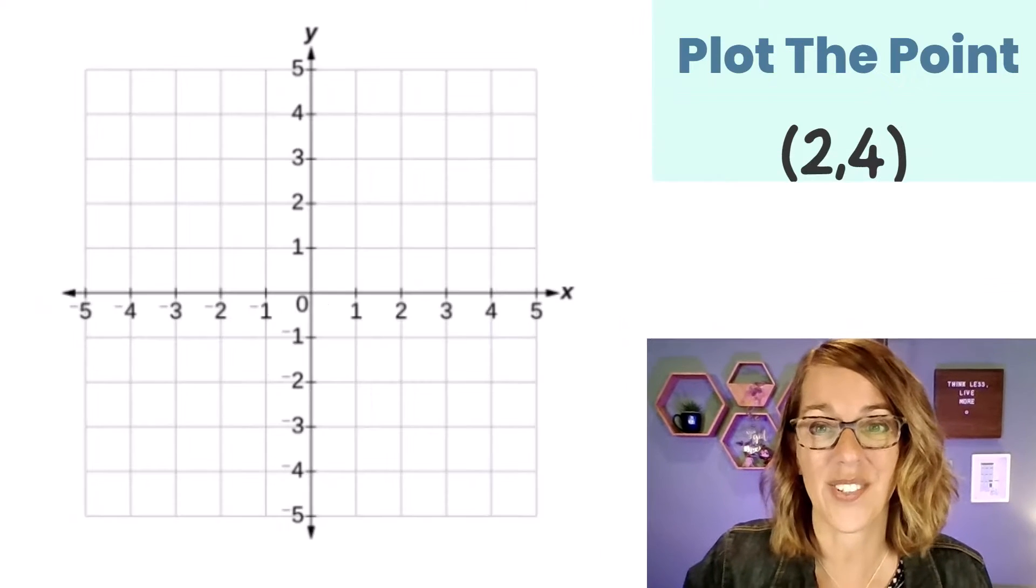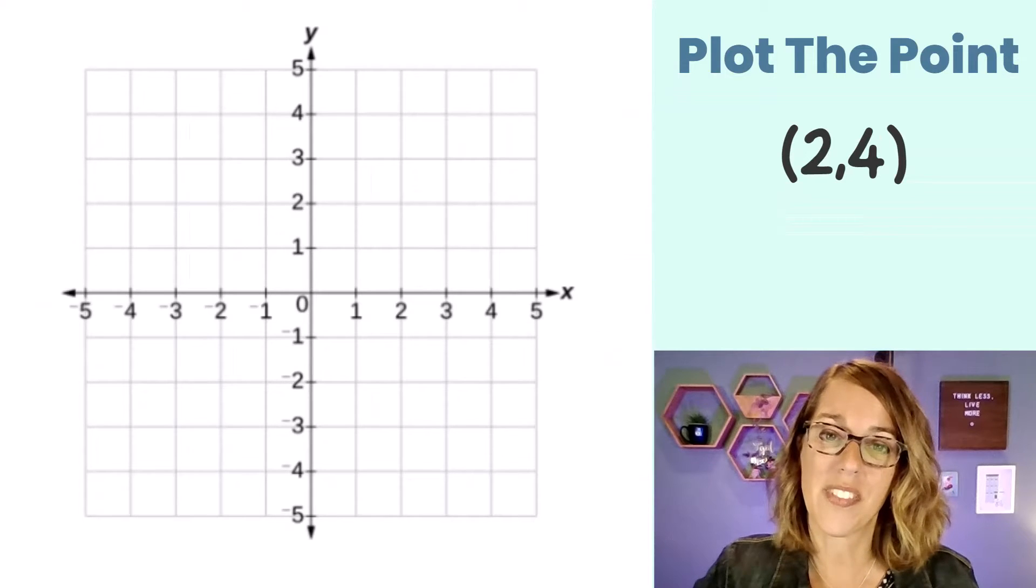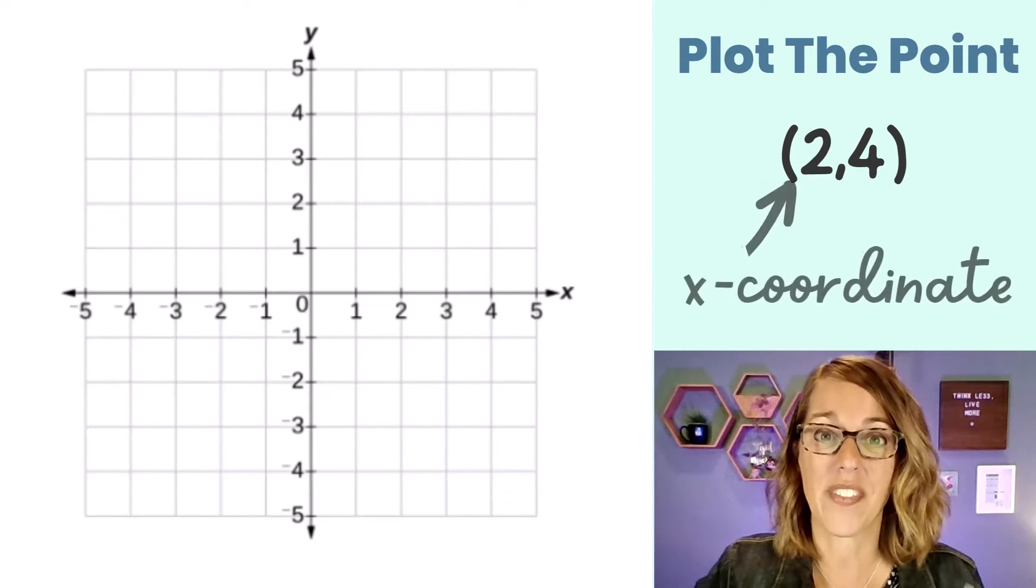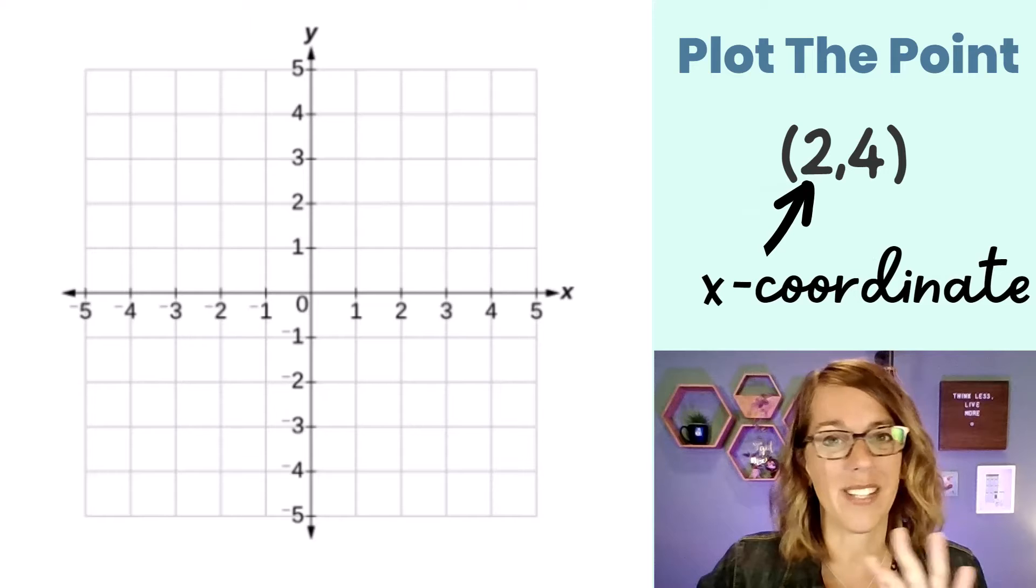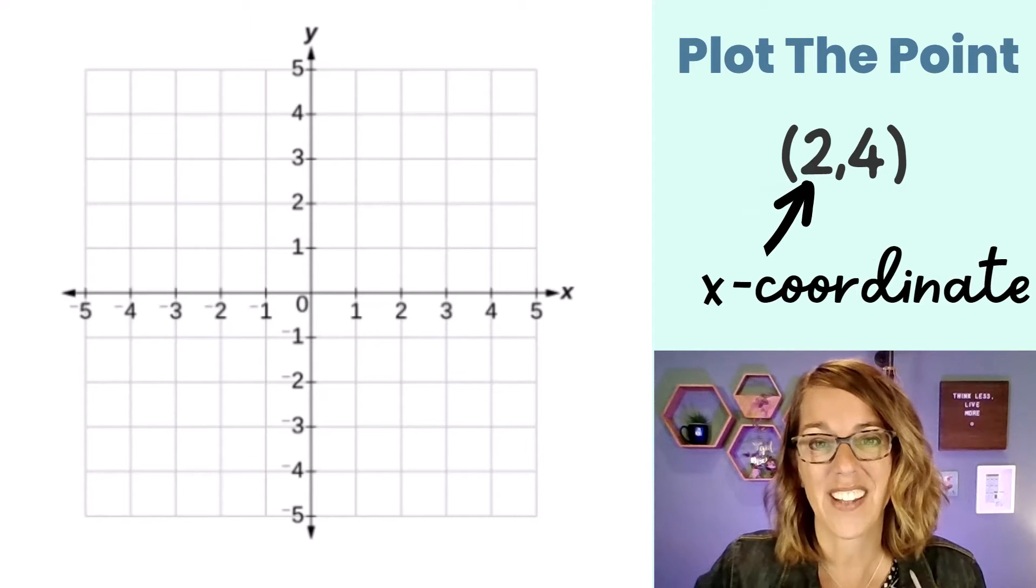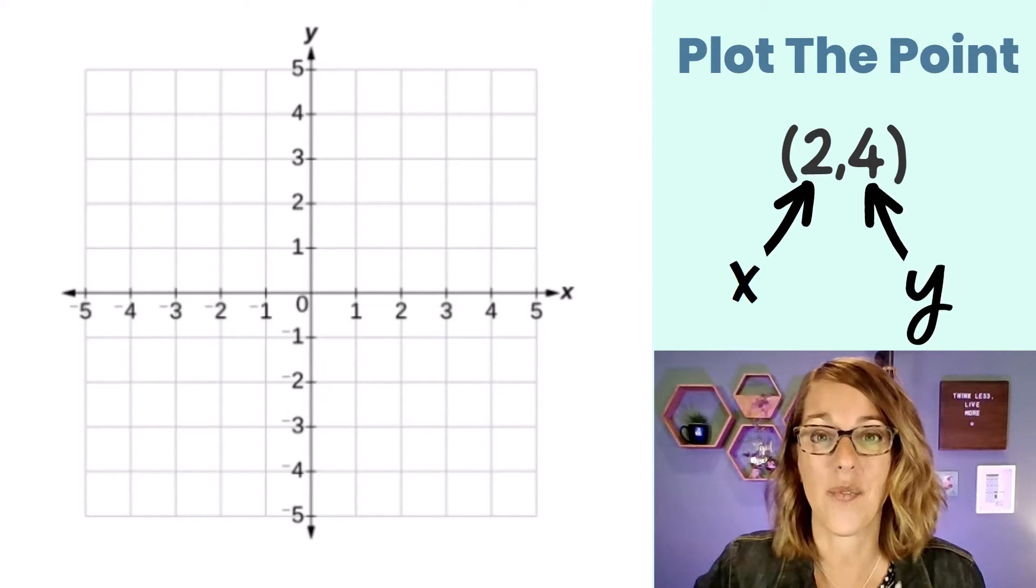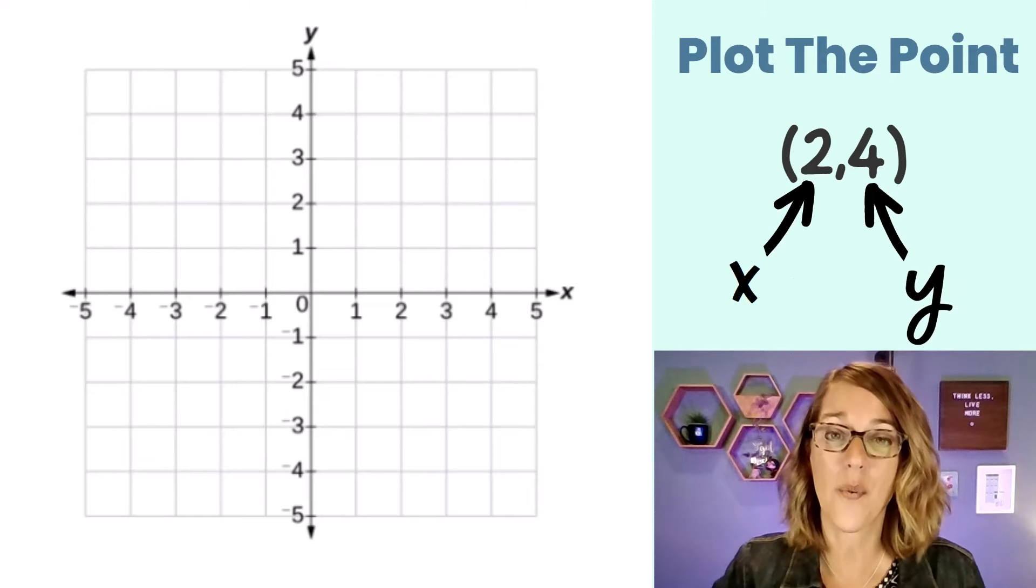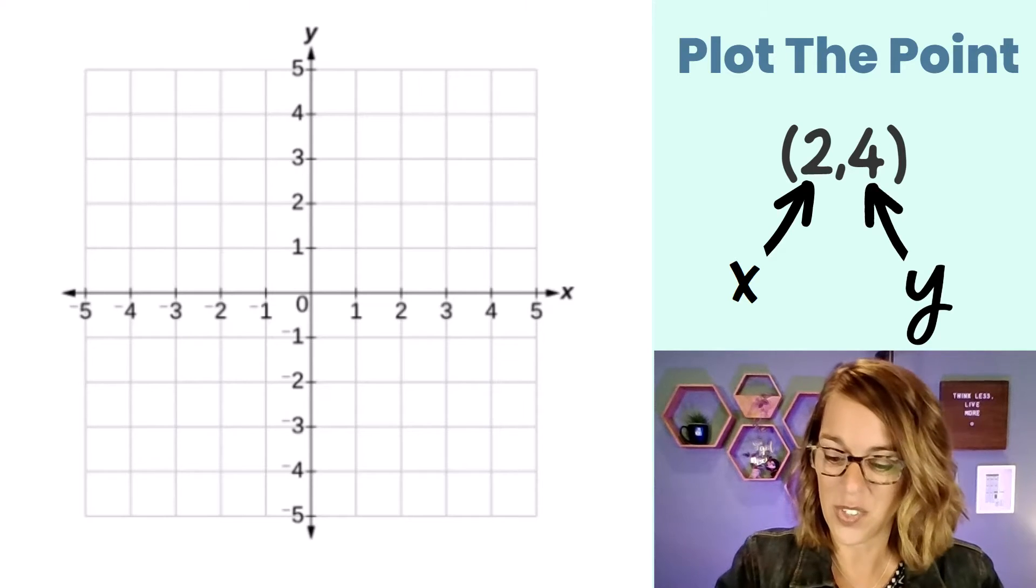Now let's get right into plotting some points. I'm going to start with the point (2,4). These are listed alphabetically, which is super helpful. The X coordinate is 2 and the Y coordinate is 4. To plot this, I'll find 2 on my X-axis. Here it is.